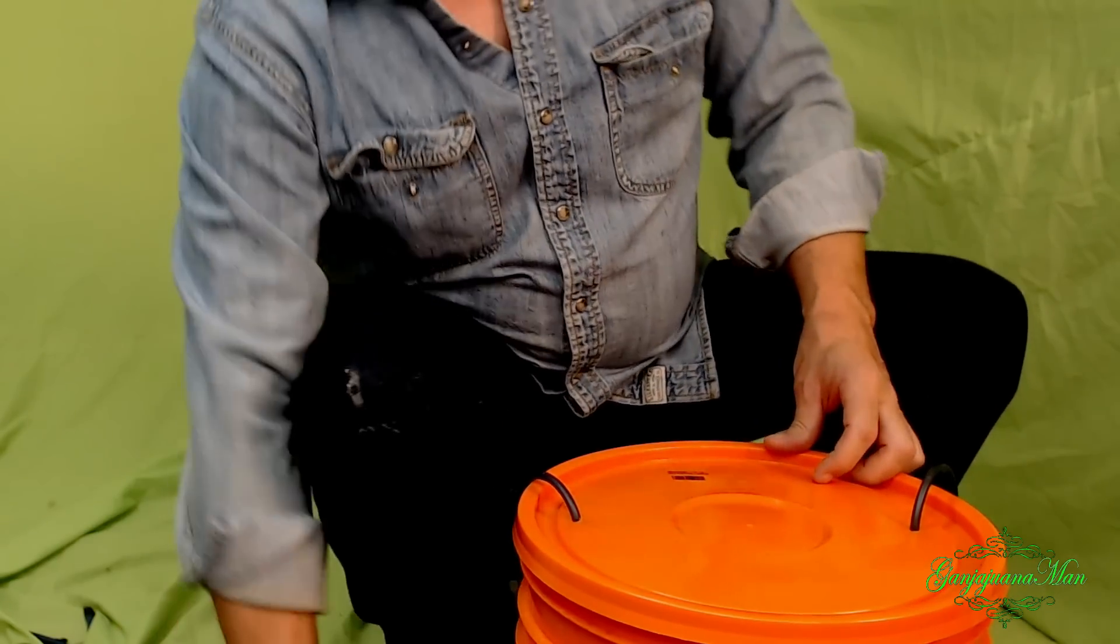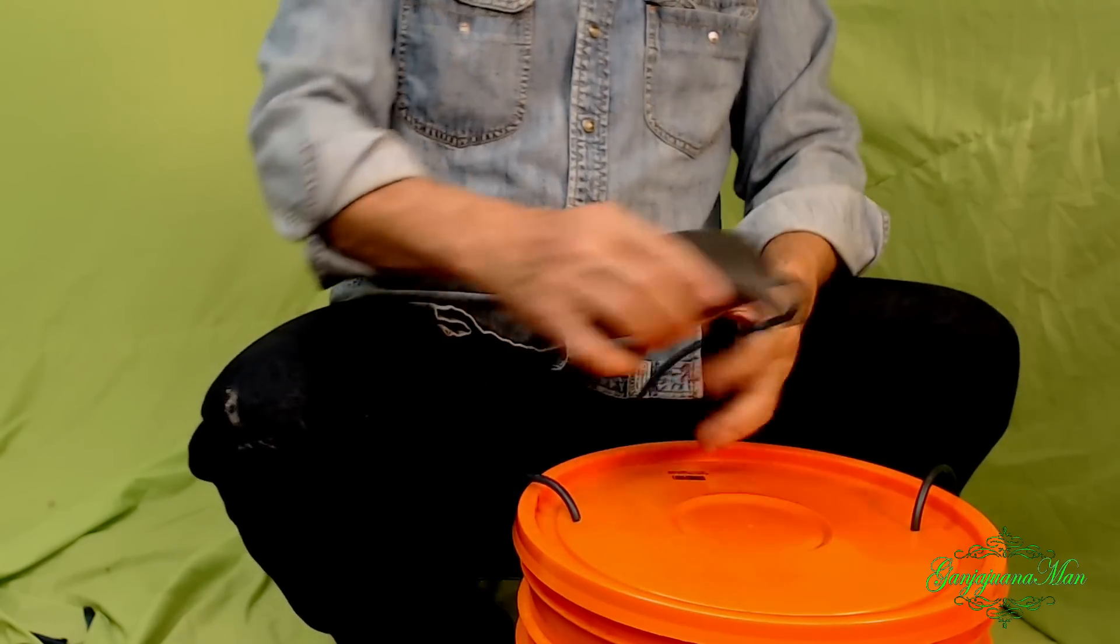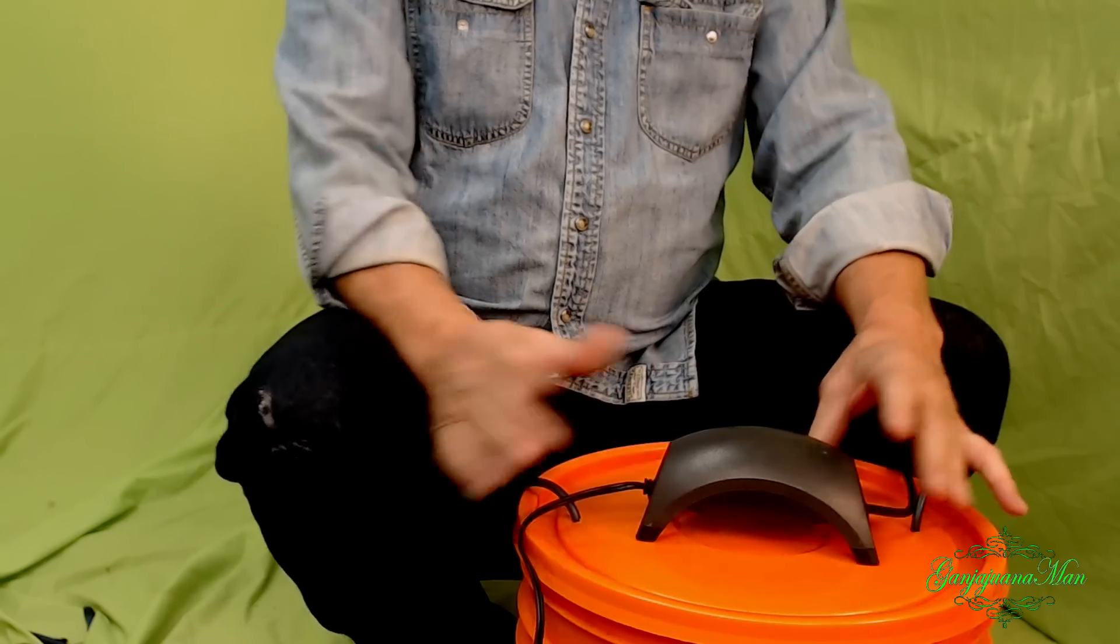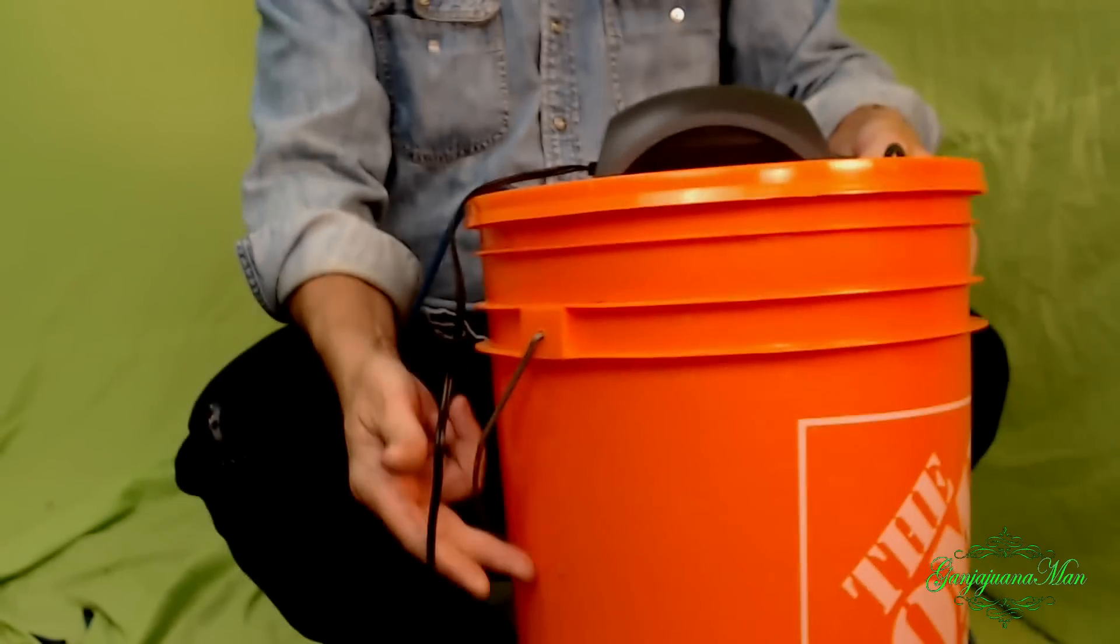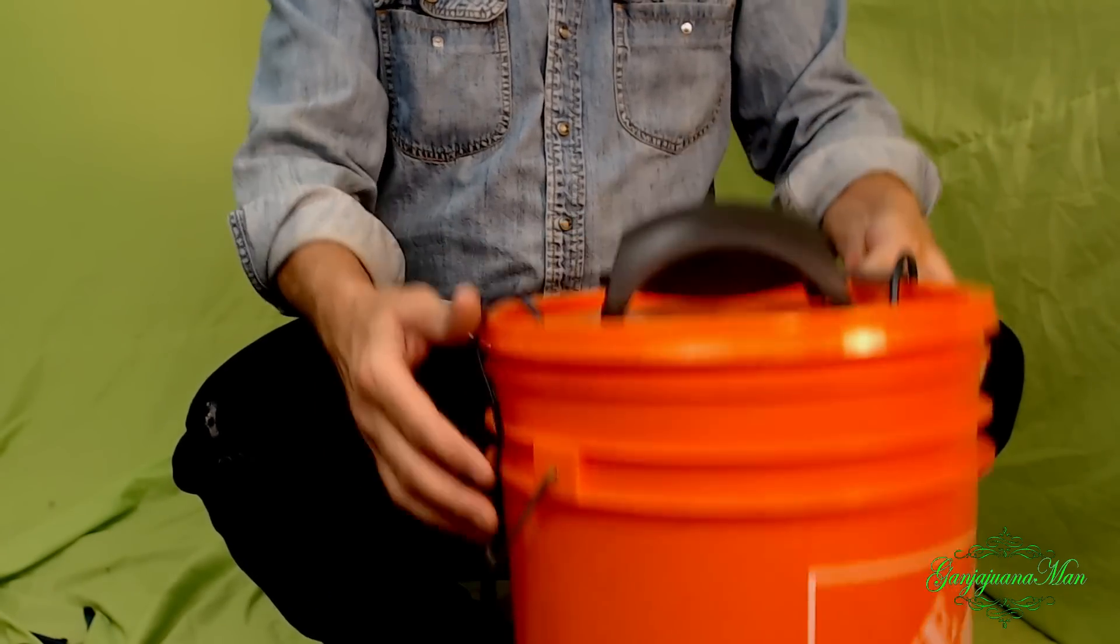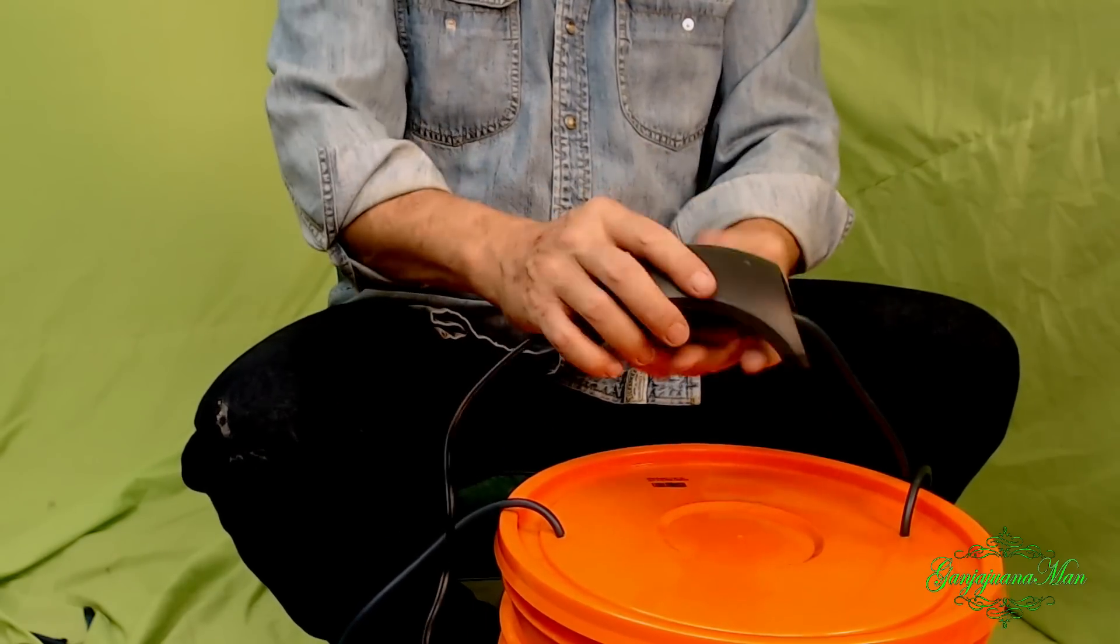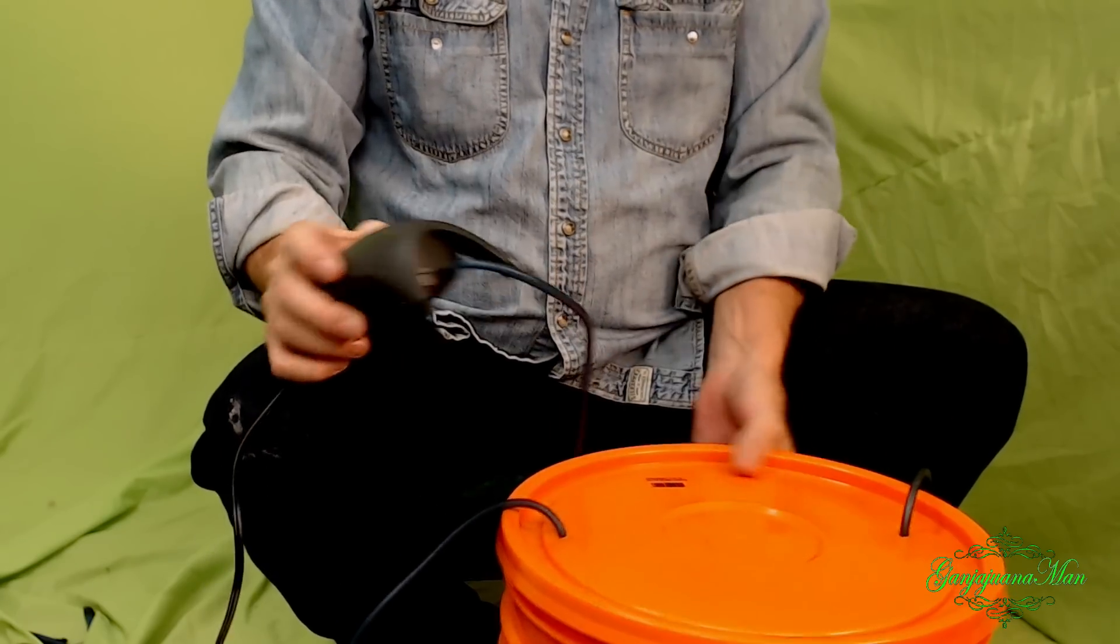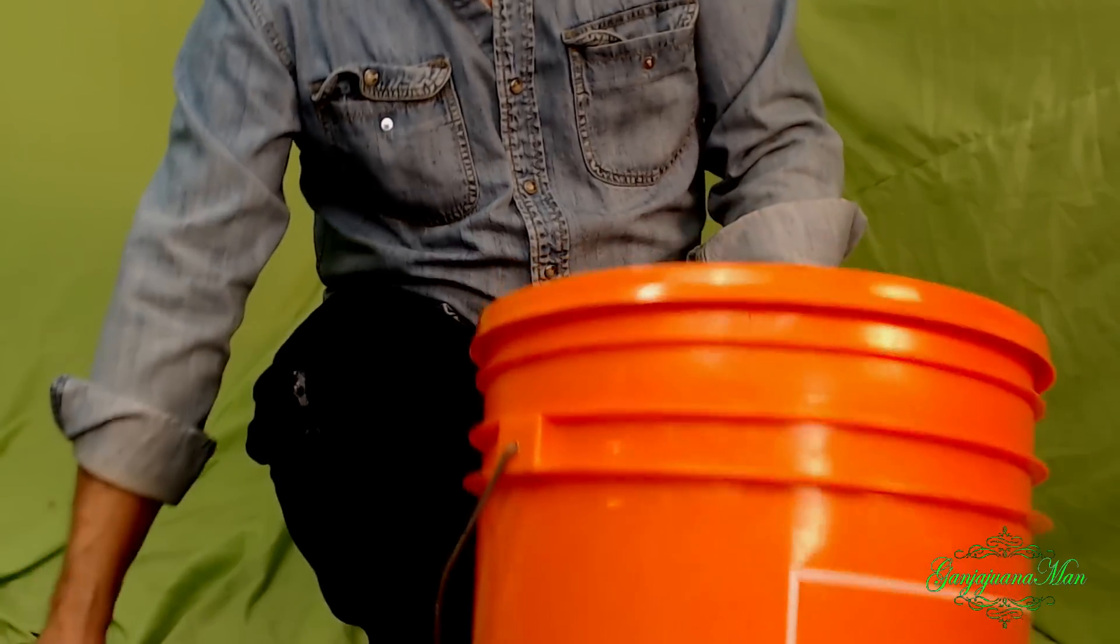And with the old CO2 generator, with the hole on top and the pump up there, some people were filling it up with too much water, and then when it would foam up, it would actually come right up into the pump, and cause all kinds of problems with their pumps, and not working, and stuff like that.